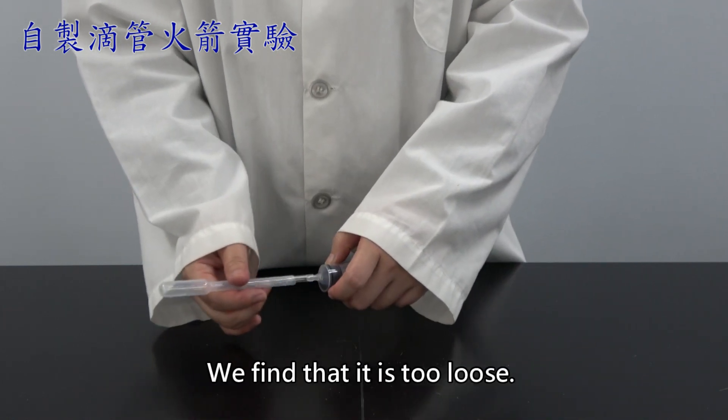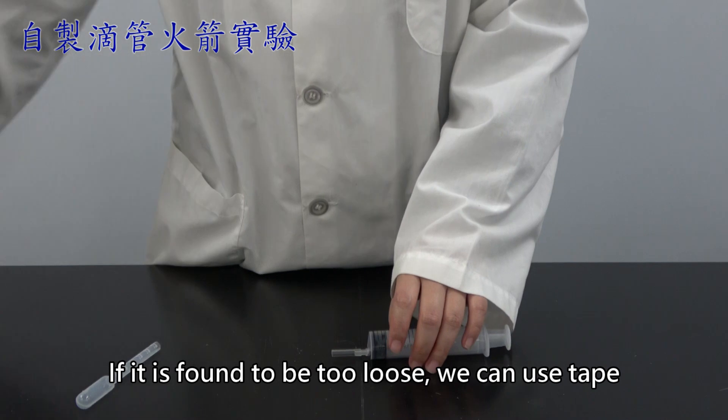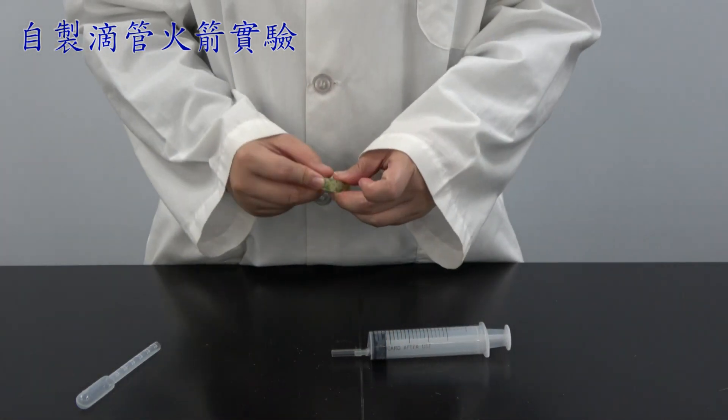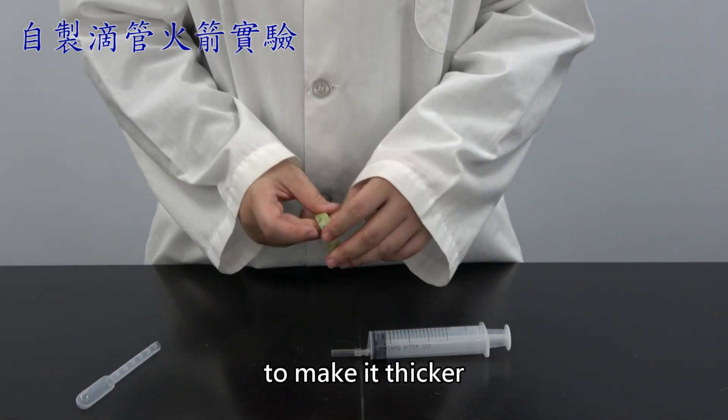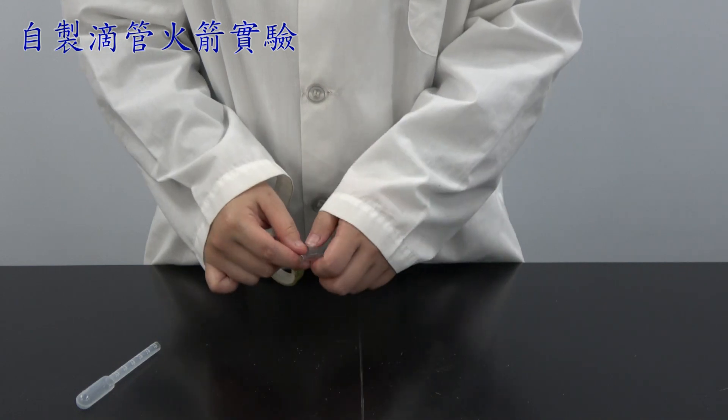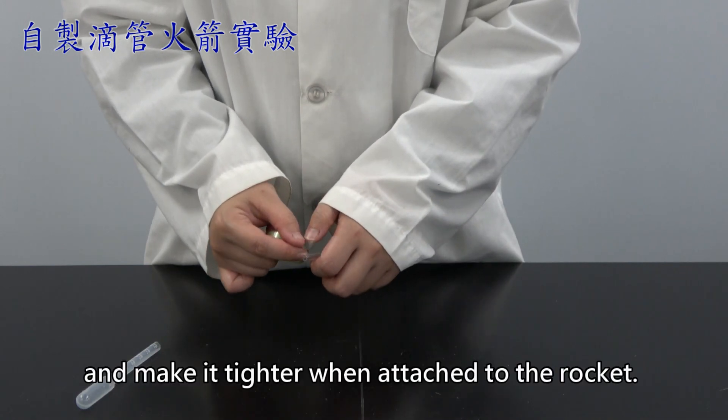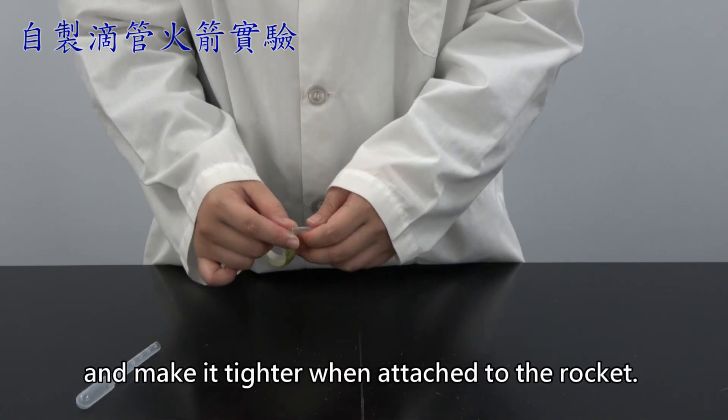We find that it is too loose. If it is found to be too loose, we can use tape to make it thicker and make it tighter when attached to the rocket.